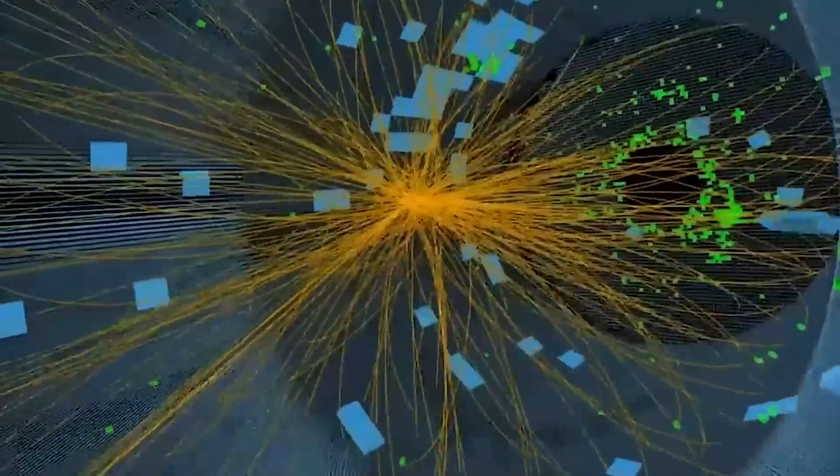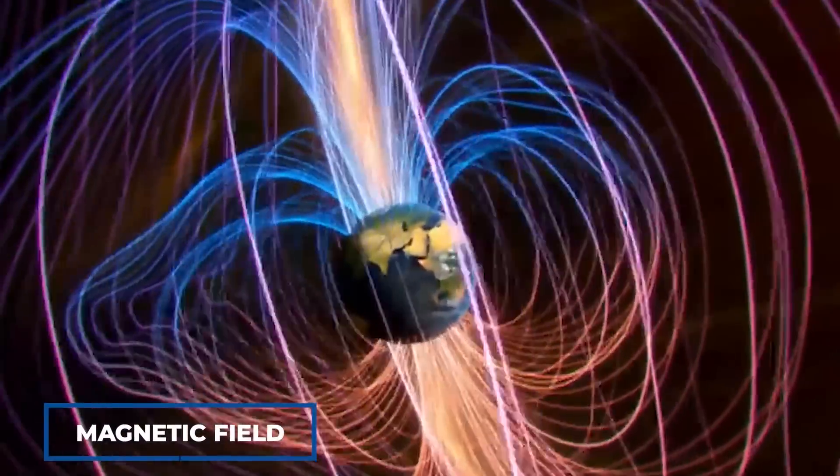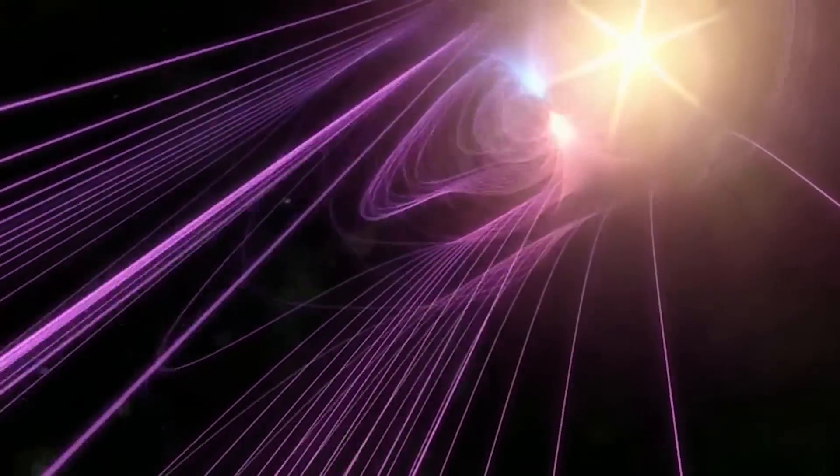In 2018, the LHCB collided heavy ions in the form of lead nuclei, producing the universe's most powerful magnetic field, which is up to a million times stronger than those found in neutron stars.